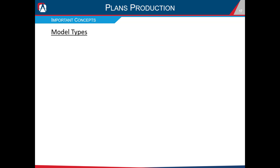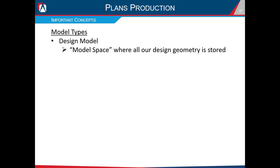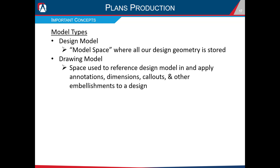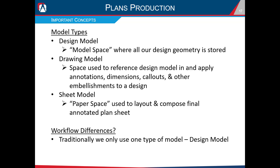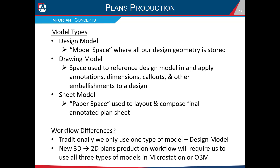There are some important concepts we'll need to wrap our heads around. The first is model types. We have the design model — model space where all design geometry is stored. Next, we have the drawing model — a space used to reference in our design model and apply annotations, dimensions, callouts, and other design aspects. And lastly, we have the sheet model, which is kind of our paper space for AutoCAD users — used to lay out and compose the final annotated plan sheet. Traditionally we've only used the design model, but the new 3D-to-2D workflow requires all three types in MicroStation or OBM.